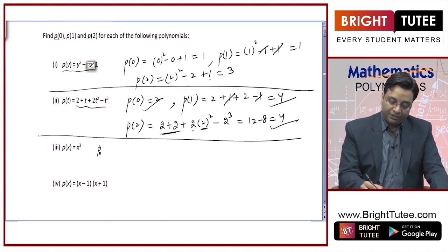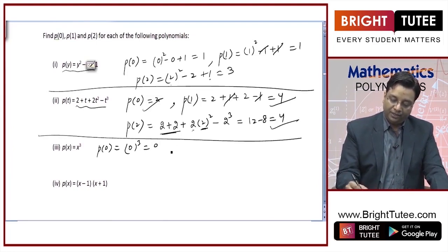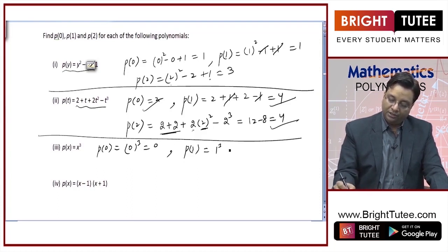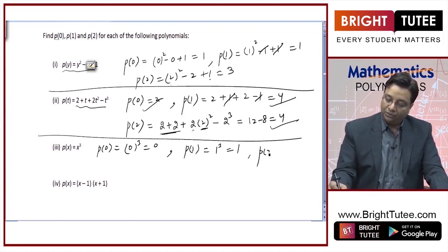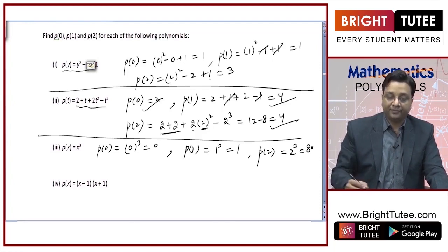For the third polynomial: p of 0 is 0 cubed, so 0. p of 1 is 1 cubed, so 1. p of 2 is 2 cubed, that is 8.